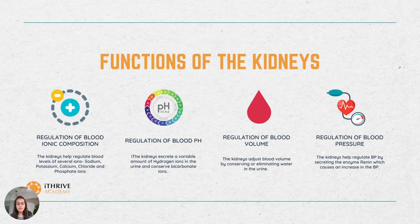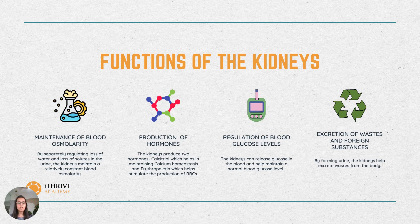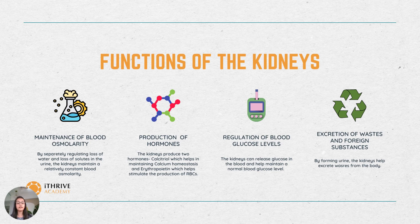The kidneys also help in the production of hormones. There are certain hormones that the kidneys produce. The first one is calcitriol, which is the active form of vitamin D secreted by the kidneys, and it helps in regulating the calcium levels in the body. The other hormone made by the kidneys is erythropoietin, which stimulates the production of red blood cells.